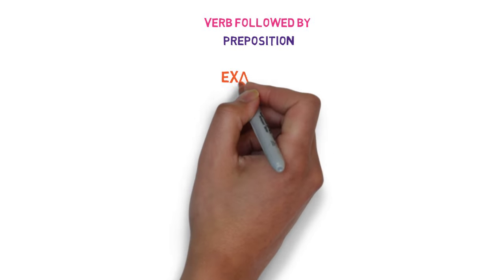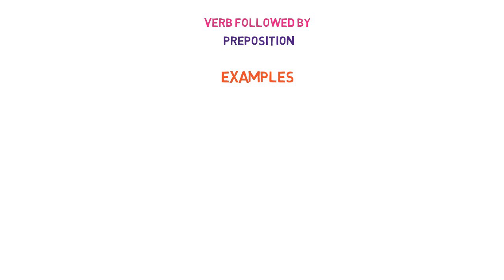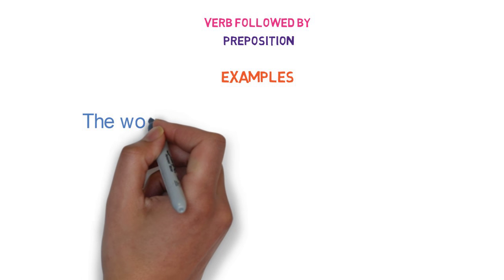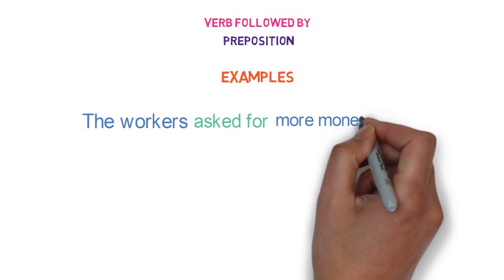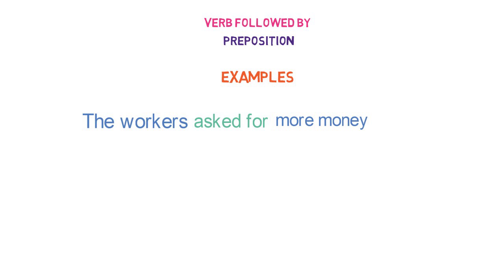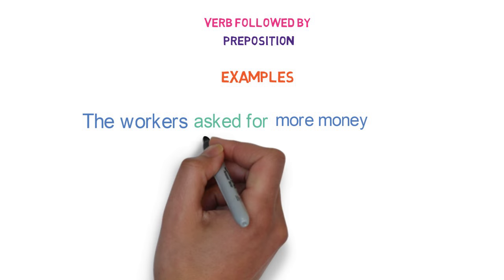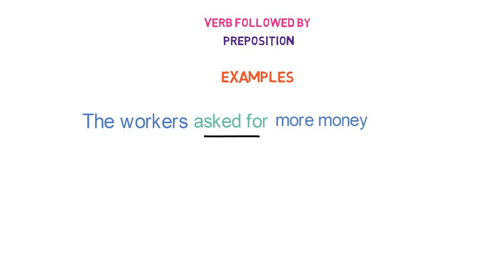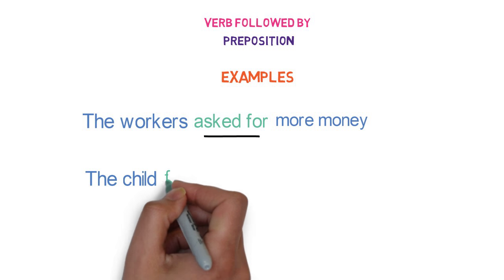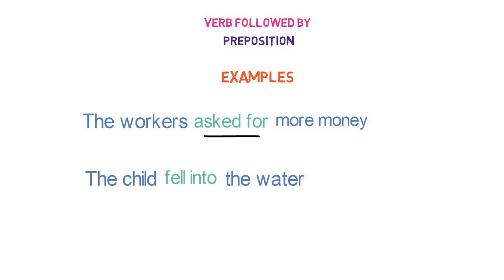Now, let's see examples of verbs followed by preposition. 'The workers asked for more money.' Here, 'asked' is the verb and 'for' is the preposition. The whole group of words 'asked for' is a phrasal verb containing preposition. Let's look into the next example. 'The child fell into the water.' Here, 'fell' is the verb and 'into' is the preposition.